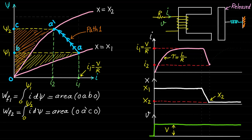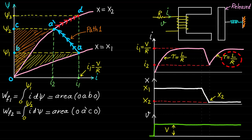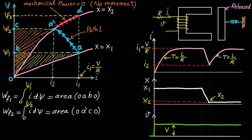Once the moving part stops at point A', the magnetic field linkage and the current I will increase following the trajectory A' to D, until reaching the steady state condition at point D. The current during this period increases at time constant Tau = L/R until reaching the steady state current I1. Note that the mechanical power during trajectory A'-D is equal to zero — there is no movement, and therefore no electromechanical energy conversion during trajectory A'-D. We focus only on the movement from A to A'.